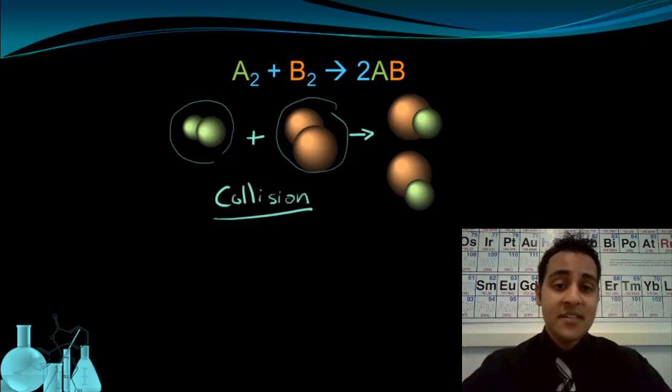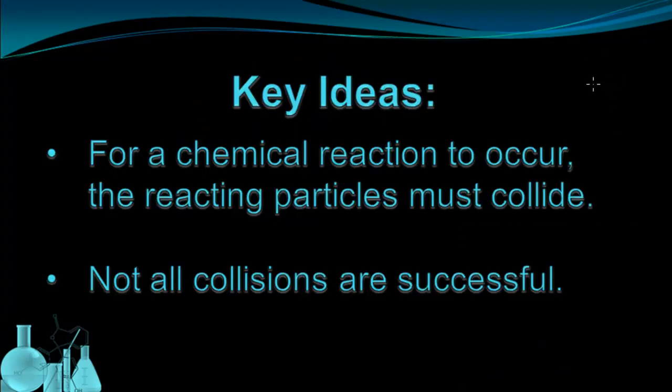And that brings us to our key ideas for collision theory. The first major idea here is that for a chemical reaction to occur, the reacting particles must collide. That's the first part of the collision theory. For a reaction to even be possible, the particles have to physically collide with each other.